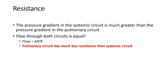So let's talk a little more about resistance. To recap what we said on that previous slide: the pressure gradient in the systemic circuit is much greater — about 83 millimeters of mercury — than the pressure gradient in the pulmonary circuit, which is about 14 millimeters of mercury. Although the flow ends up being equal because the pulmonary circuit has much less resistance, the pulmonary circuit doesn't need a higher gradient because it doesn't encounter as much resistance.